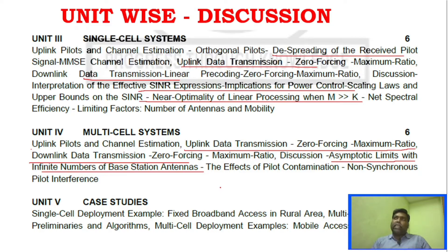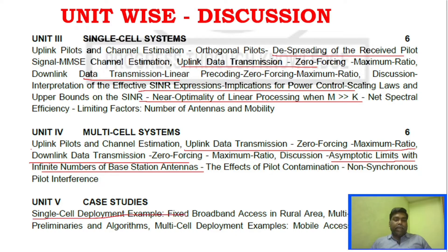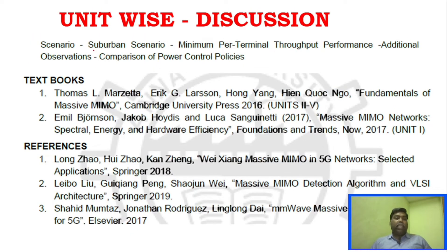Unit 5 is full of case studies and is relatively easy. It covers implementation examples including: single cell deployment example — fixed broadband channel access in a rural area, which is a very important question. Multi-cell deployment covers three scenarios: mobile access in dense urban areas, and suburban scenarios. We will also look at the comparison of power control policies — just go through these.